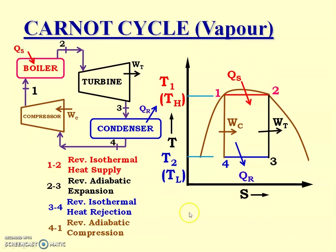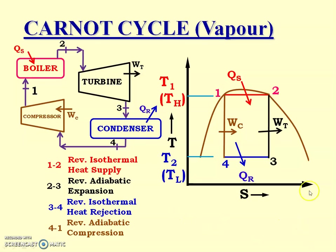Looking at this temperature-entropy curve, process 1 to 2 has constant temperature T1 or TH, which is the heat source temperature. Another constant temperature during process 3 to 4 is T2 or TL, the heat sink temperature in the condenser. Since processes 2 to 3 and 4 to 1 are isentropic, S1 equals S4 and S2 equals S3.